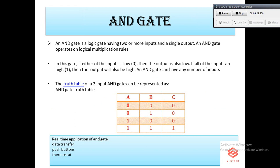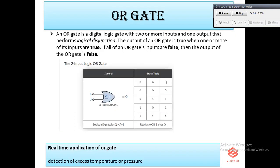The first gate is the AND gate. The AND gate is an electronic circuit that gives a high output only if all its inputs are high. A dot is used to show the AND operation — for inputs A and B, the output is represented as A·B. As you can see in the truth table, if both inputs are zero the output C is zero; output is high only when both A and B are one. The AND gate essentially represents multiplication.